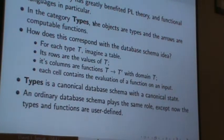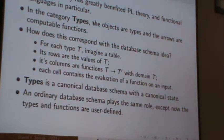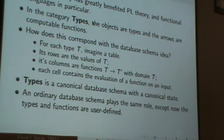Okay. So now I'm trying, now I'm getting into the category theory uniting database and programming languages part. So category theory has greatly benefited programming language theory and functional language in particular. And so in the category of types, the objects are types and the arrows are computable functions. So how would you see this as a database schema idea? What is, what's going on? So for each type in the world, string, int, et cetera,